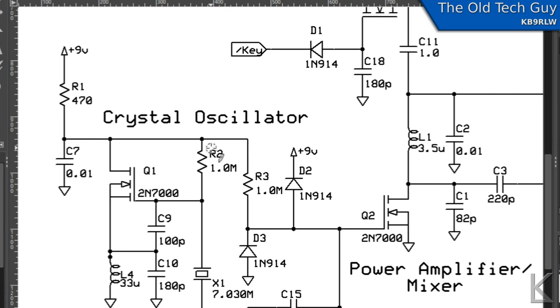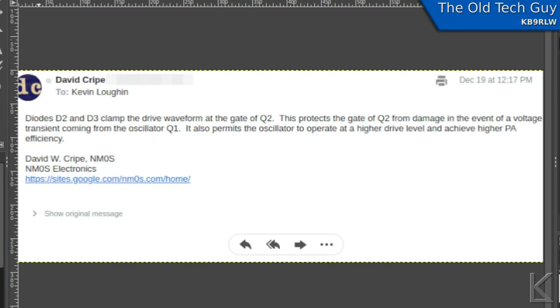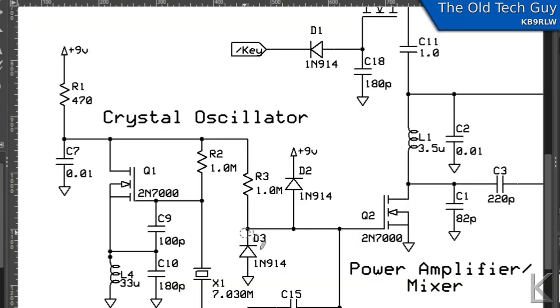I emailed David NM0S the designer of this circuit and he responded and he says here that diodes D2 and D3 clamp the drive waveform at the gate of Q2 to protect the gate of Q2 from damage in the event of voltage transients coming from the oscillator and it also permits the oscillator to operate at a higher drive level. So that's what those are for. So there we go that answers that.